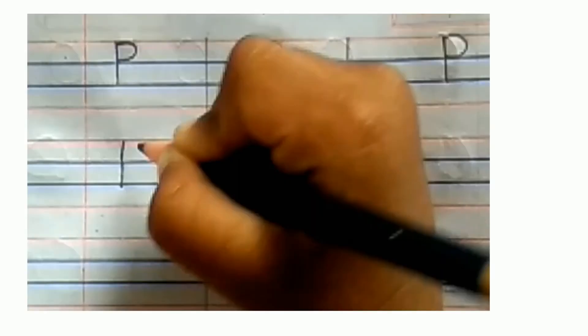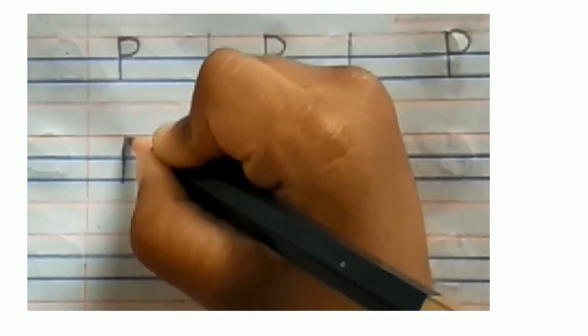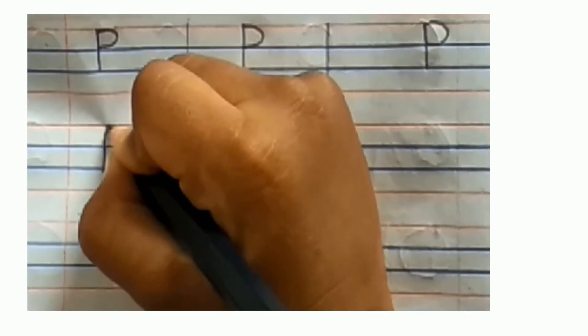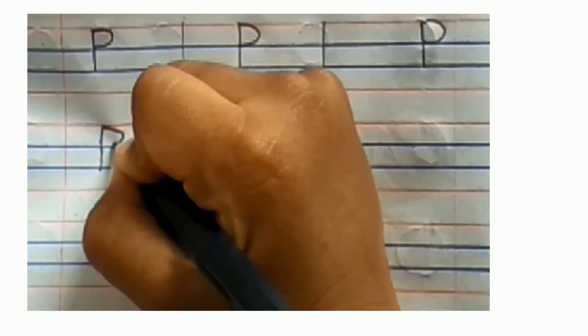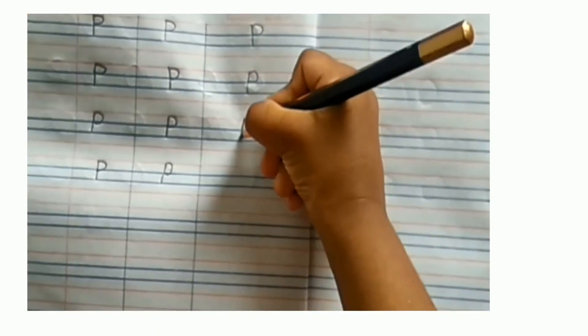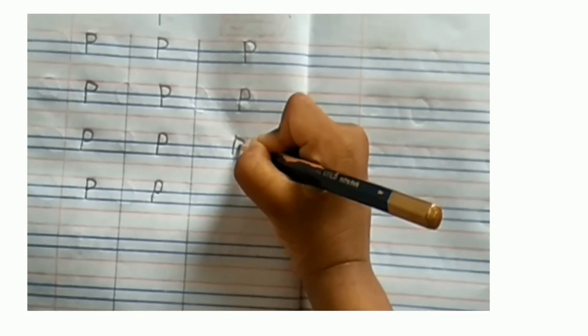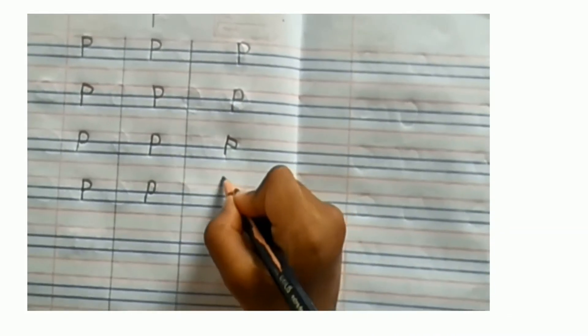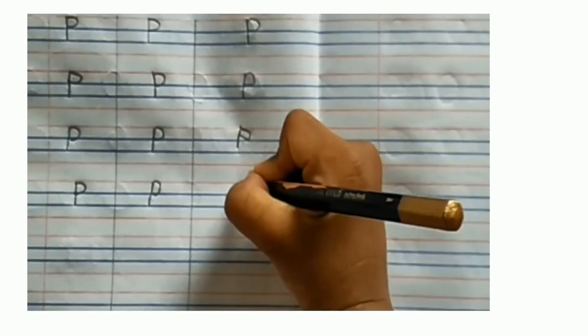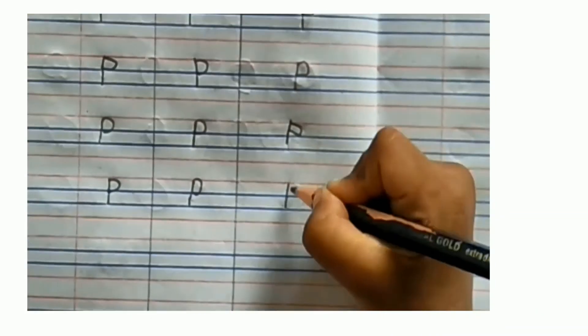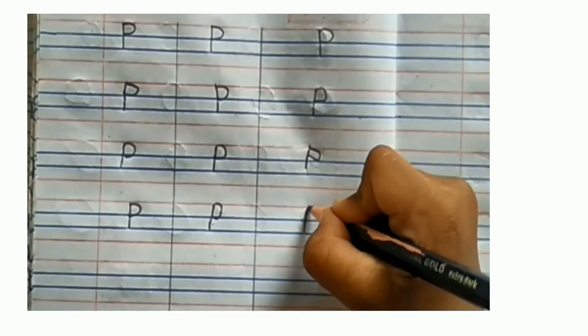Let's write capital P. One standing line, one curve. One standing line, one curve. One standing line, one curve.